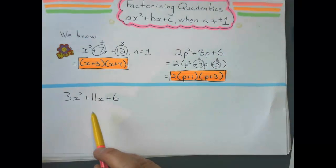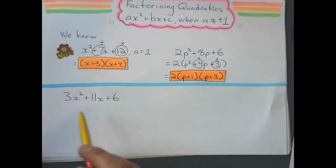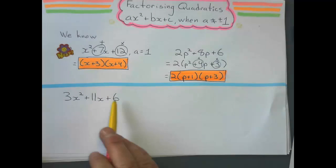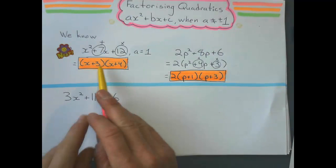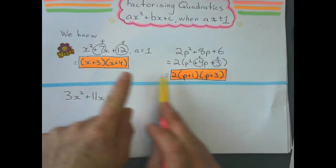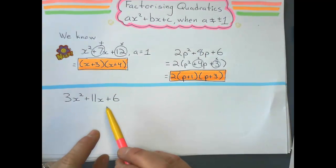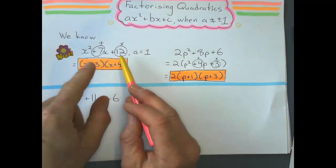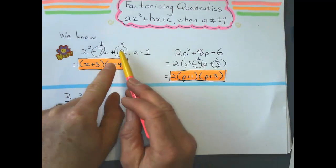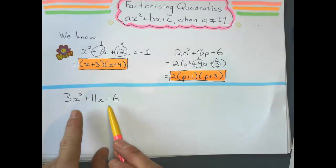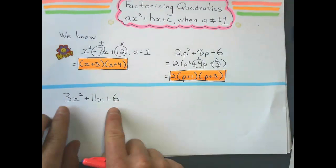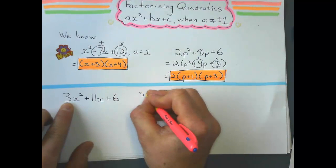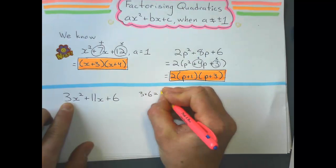Here's an example of the real deal. In this example, the coefficient isn't 1, and there's no common factor — 3, 11, and 6 have no common factor — so I can't do the previous methods. I'll show you another method that works every time, and we're still going to play this game where you've got to multiply to get one number and add to get another. First of all, you multiply these two numbers here: 3 times 6 gives me 18.